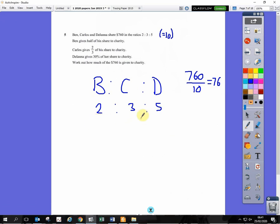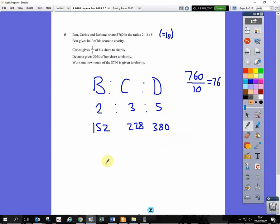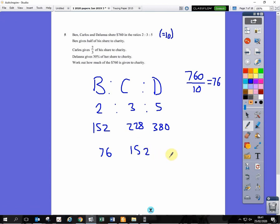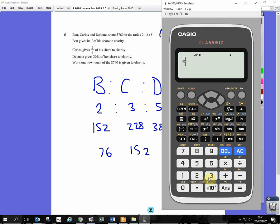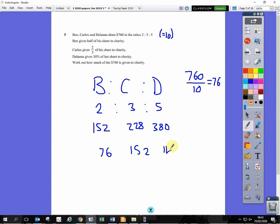Ben gives half of his share to charity. So half of 152 is 76. Carlos gives 2 thirds of his share to charity. If you want to work out 2 thirds of 228, type it in like this: 2 thirds times 228. That gives you 152. And then Delana gives 30%. You can do 30% like 30 over 100, or even 0.3, times 380. She gives 114. Add all these amounts together. This is the total amount given to the charity. And that's 342.